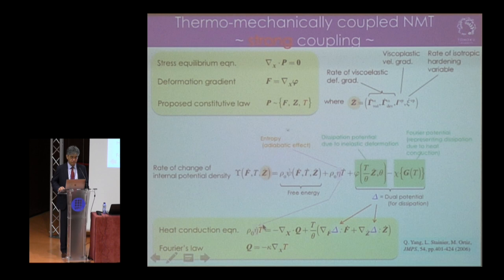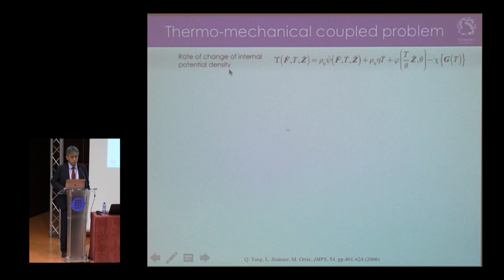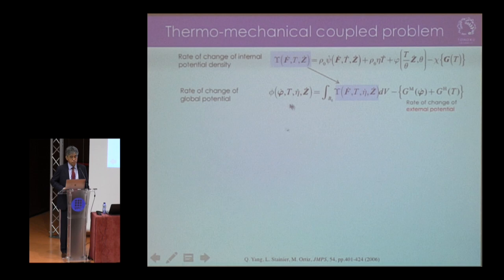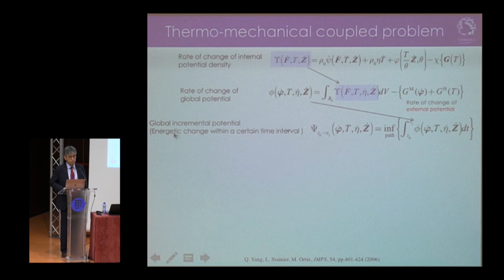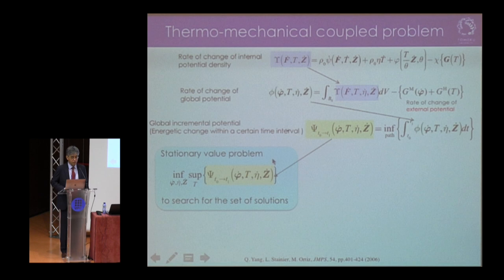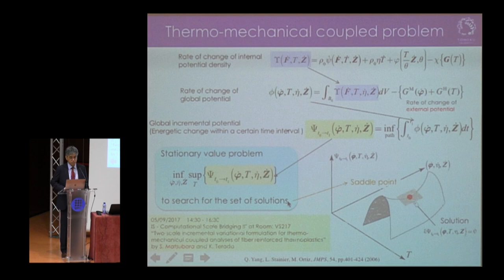Once we define the rate of change of internal potential density, we evaluate the rate of change of global potential for the overall body, including the rate of change of external potential. We then compute the global incremental potential — the energetic change within a certain interval — and define a stationary value problem as the minimization of this incremental potential to find the solution set corresponding to the saddle point in the solution space. The solution method for this saddle point problem was presented yesterday by Mr. Matsubara. Due to time constraints, let's move on.